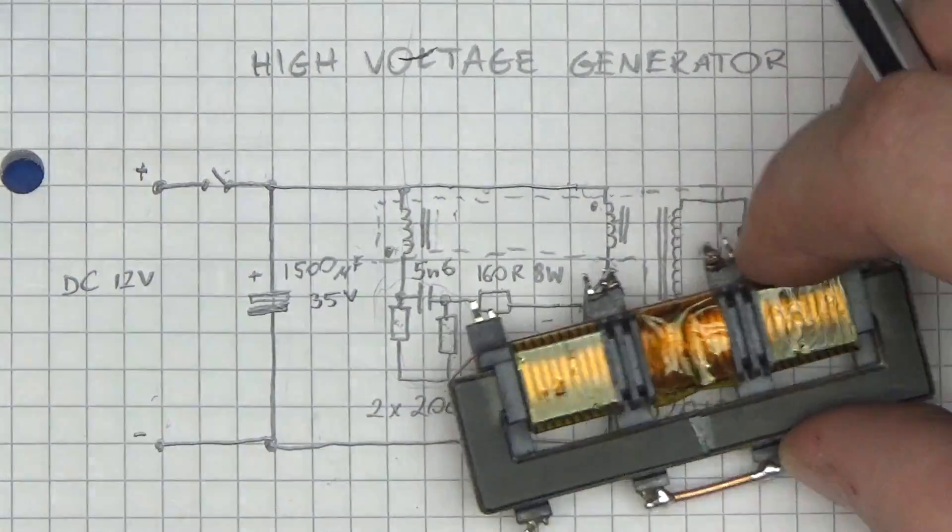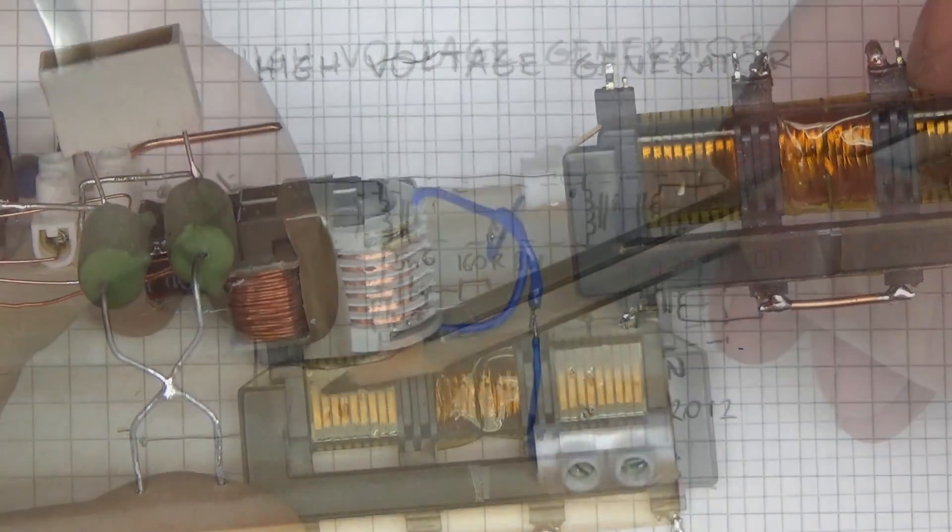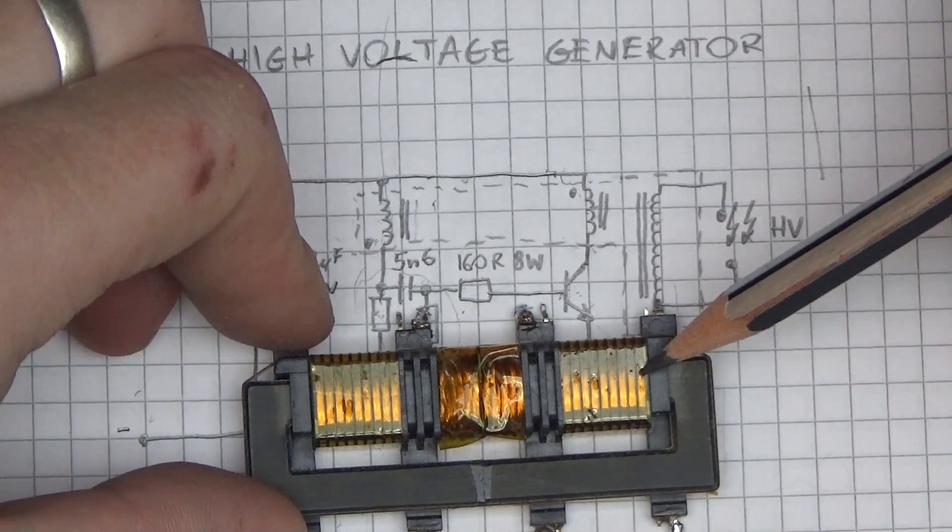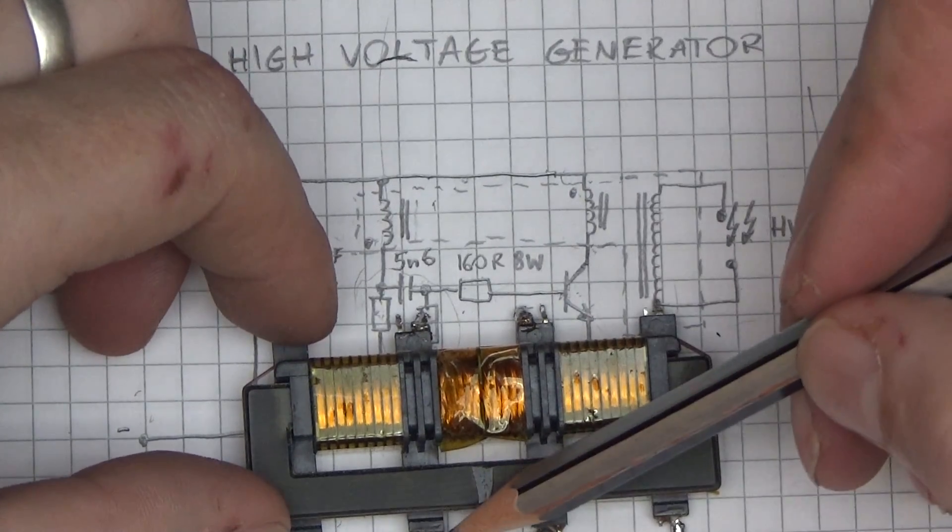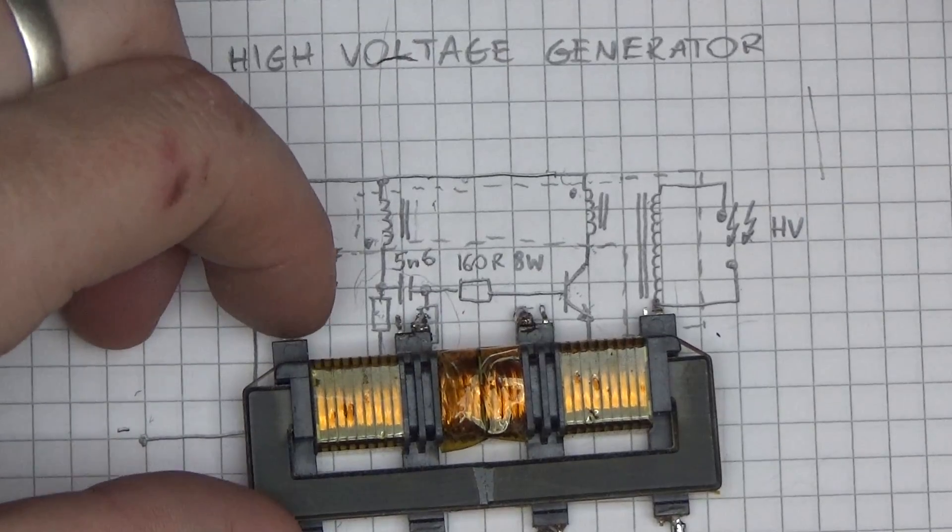This transformer here is a little bit different from the one supplied in the Chinese kit. First of all we've got two secondary high voltage windings which will be helpful because if I bridge them in series we will get double the voltage out of it.